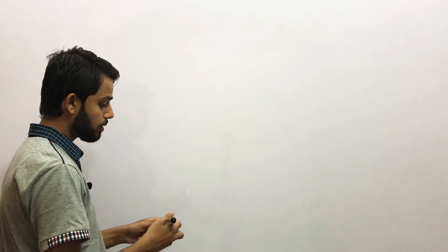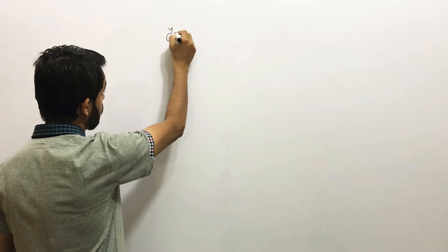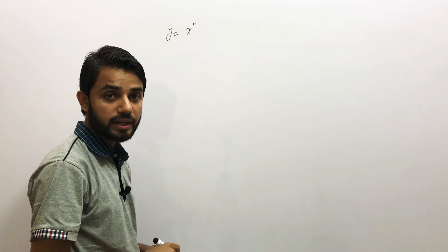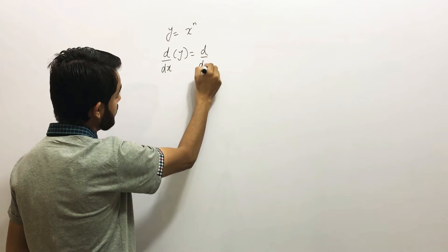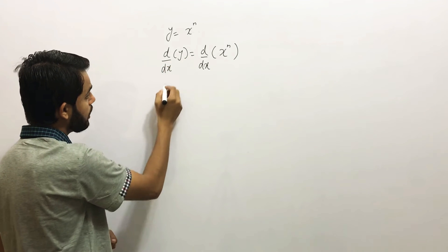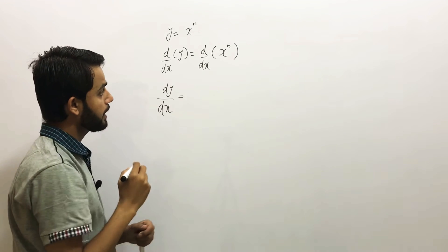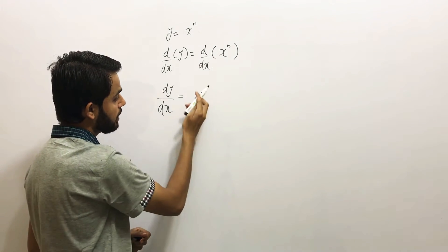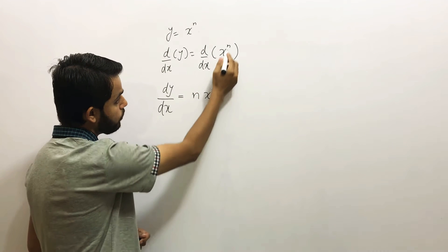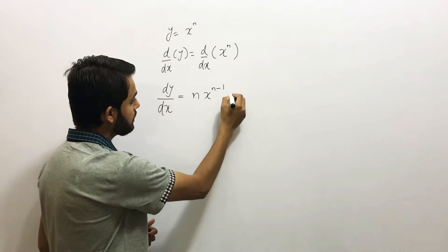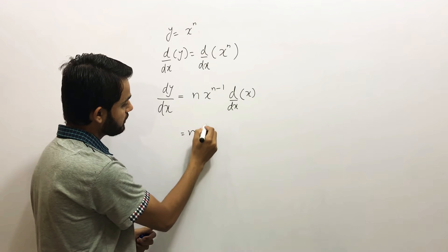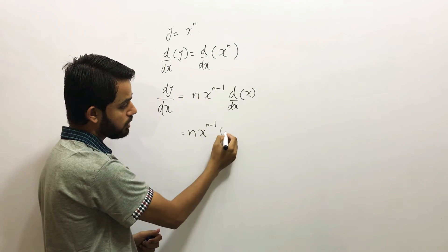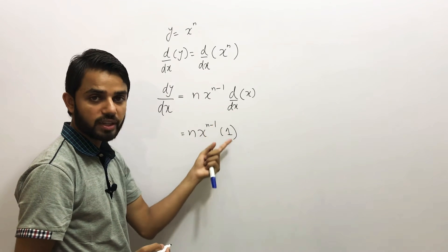What does the power rule say in general? For the power rule you must have some power in the variable. Let's assume we have a function y = x^n and we want to calculate its derivative. We apply d/dx on both sides, so dy/dx becomes n·x^(n-1), and the derivative of x with respect to x gives you 1.